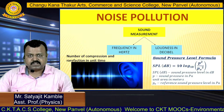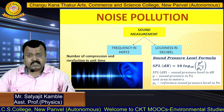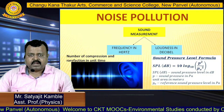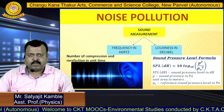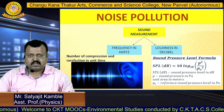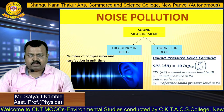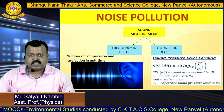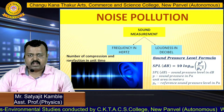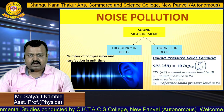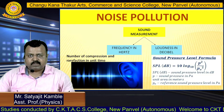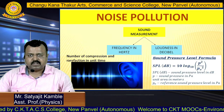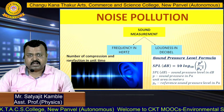The number of compressions and rarefactions in unit time can be calculated, and this is known as frequency. The unit of frequency is hertz. Sound can also be measured in terms of decibel, which gives us an idea about loudness. Decibel can be calculated using a parameter known as sound pressure level. In the sound pressure level formula, we use a logarithmic equation and calculate sound pressure by comparing it with a reference pressure.